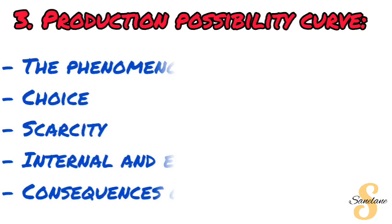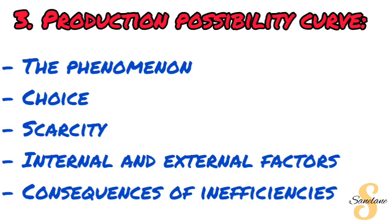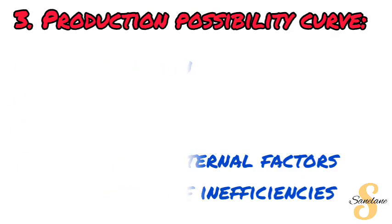The third topic under microeconomics is the production possibility curve. You need to cover the phenomenon of the production possibility curve — be able to explain and define it — and also explain choice and scarcity as they relate to it. Then cover internal and external factors, and end with consequences of inefficiencies.